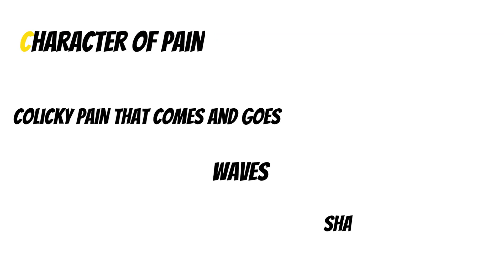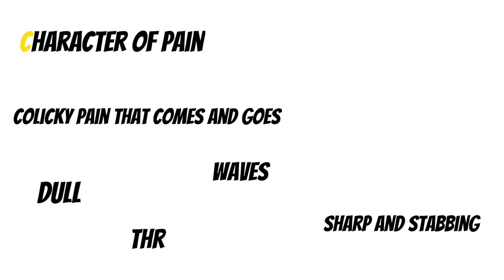Then we move on to the character of pain. When we ask a patient to describe the pain: is it a colicky pain that comes and goes? Is it dull? Is it coming in waves? Does it throb? Is it sharp and stabbing? The character of pain is quite important because it guides us in certain directions. Is it a sharp pain only when we move? That gives us a clue — could that be a musculoskeletal thing? That's the character of pain.